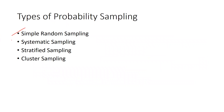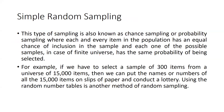The types of probability sampling we will study are: simple random sampling, systematic, stratified, and cluster sampling. Simple random sampling is also called chance sampling, where each and every item in the population has an equal chance of inclusion in the sample, and each possible sample in a finite universe has the same probability of being selected.